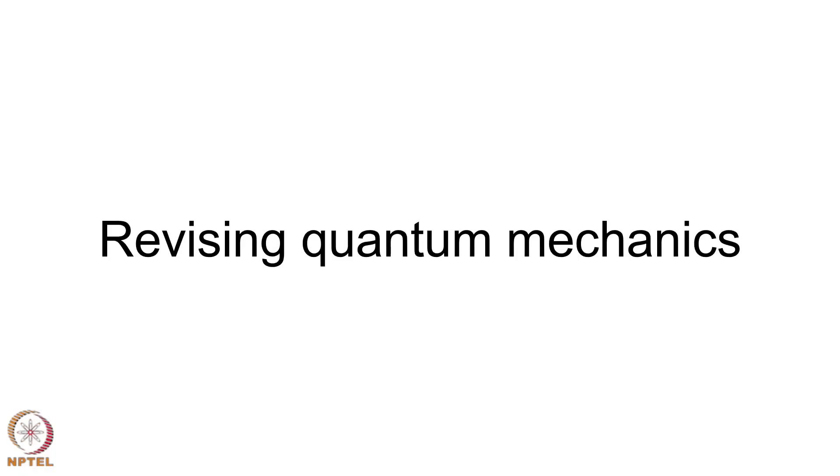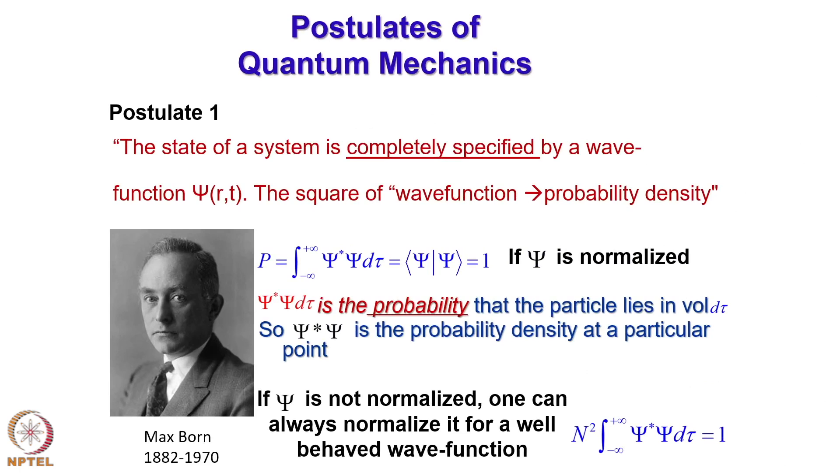Now, modern quantum mechanics starts with the postulates of quantum mechanics. Remember, these postulates cannot be derived or should not be tried to be justified. We should know about the postulates and what are the consequences of the postulates.